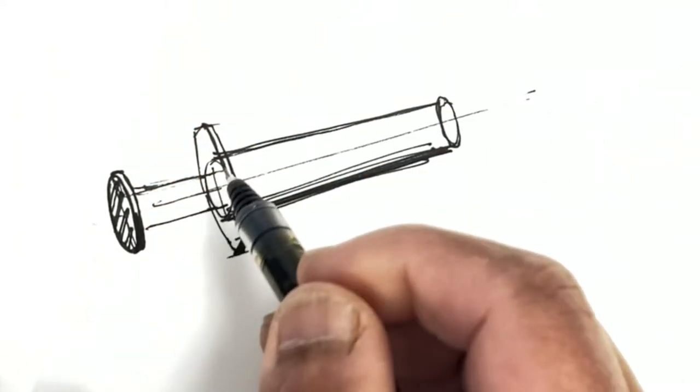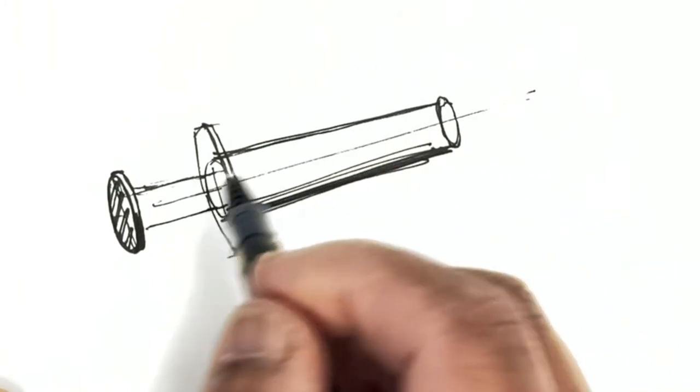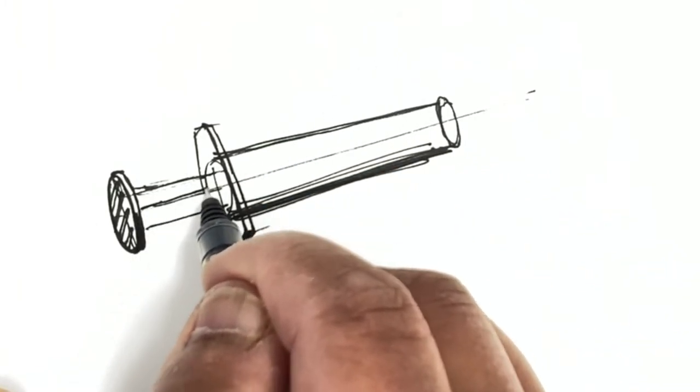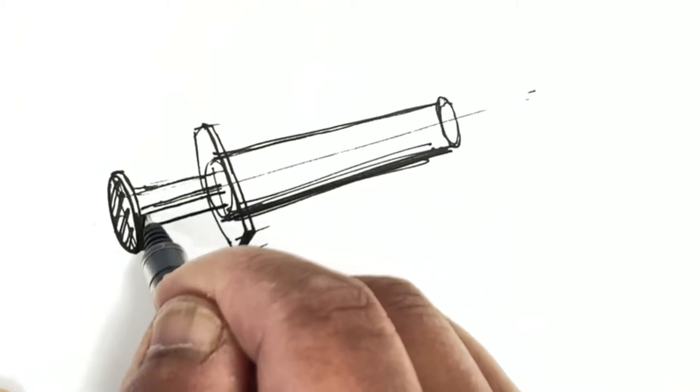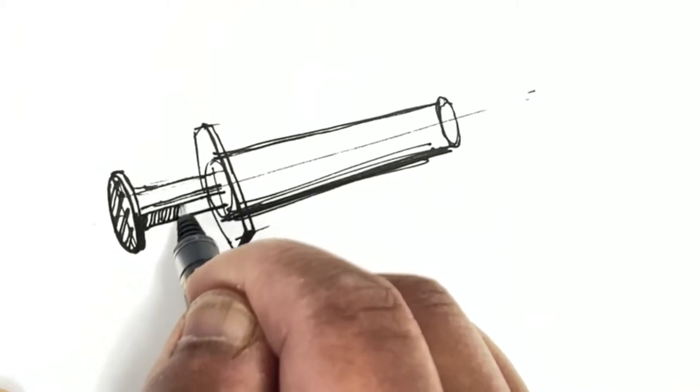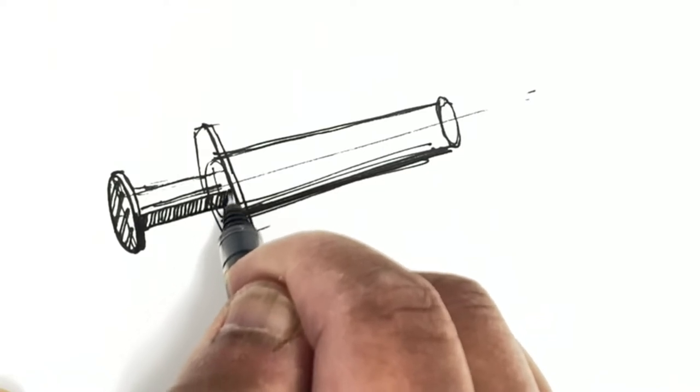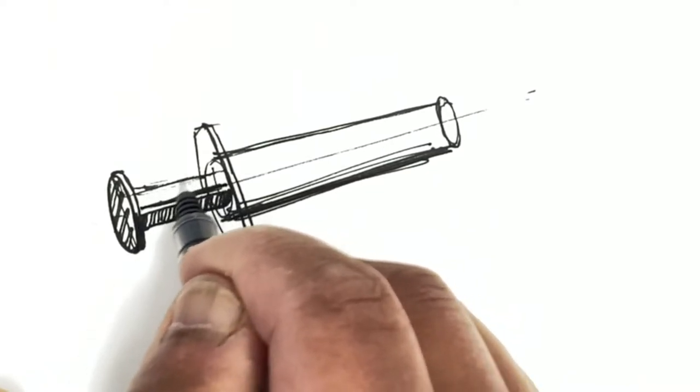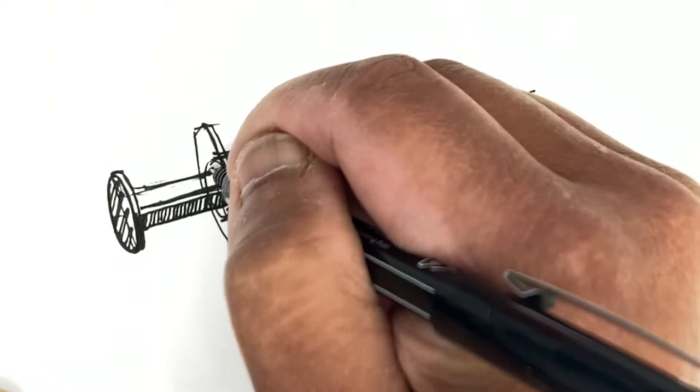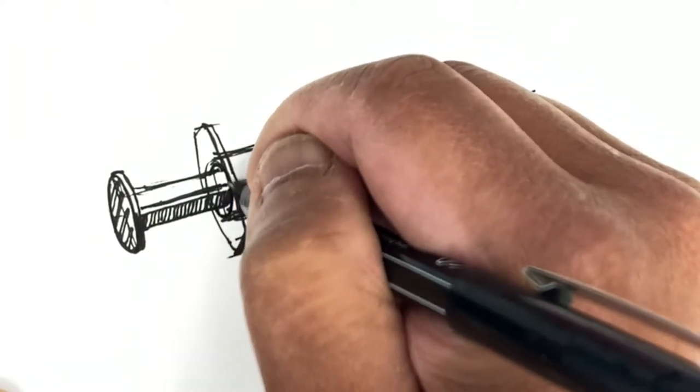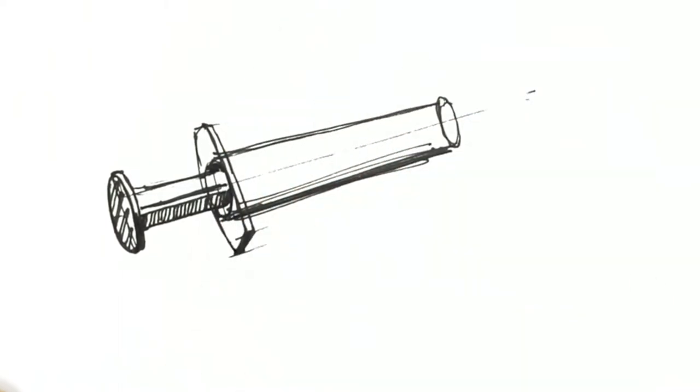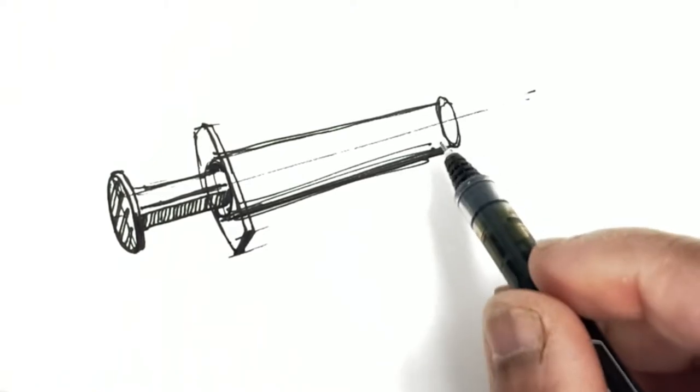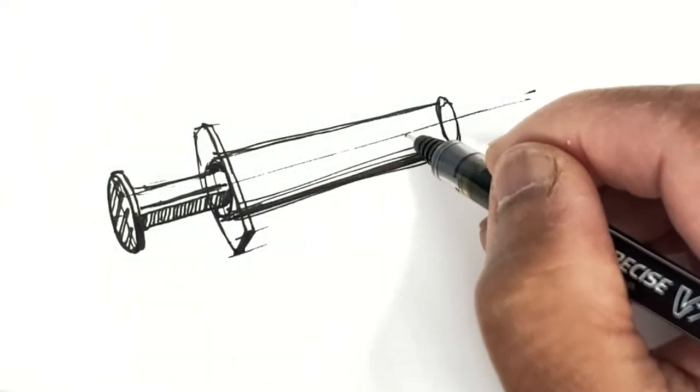The end of the flange has these ridges, so I mark that. The plunger itself has this cross-shaped cross-sectional plunger part which connects the flange to the barrel. I'll add a little bit of shadow to show that it's going inside the barrel.